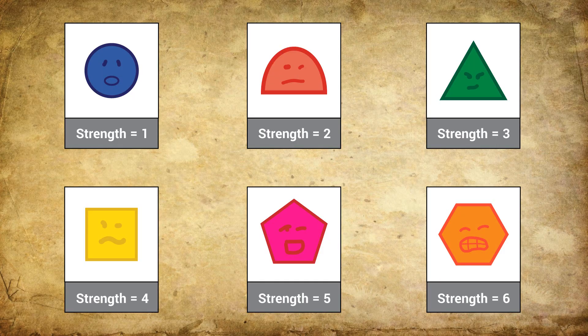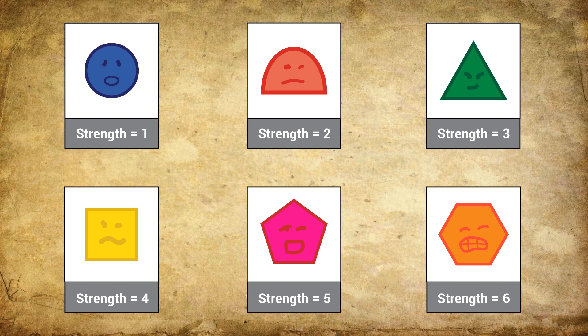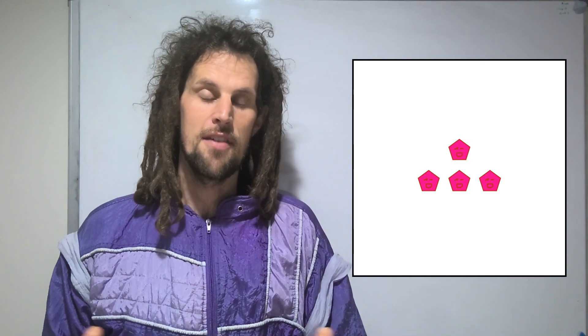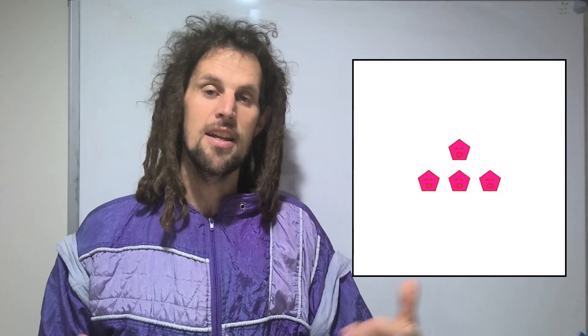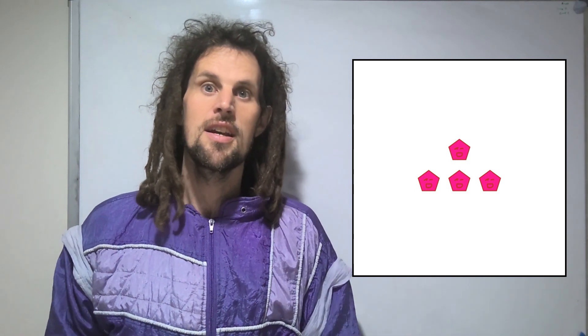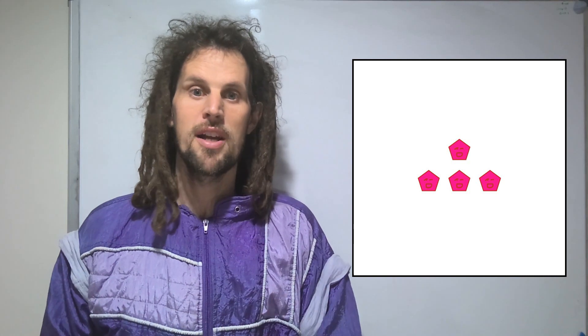So you start introducing different shapes. Now the shapes in this activity, the number of sides on each shape determines its strength. So one triangle is worth three circles and one hexagon's worth six. So if you look at the next problem here, you've got four pentagons and they're five sides each. So actually that has a strength of 20. So you need to be really careful.